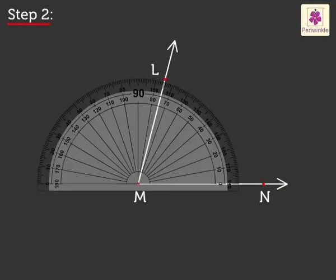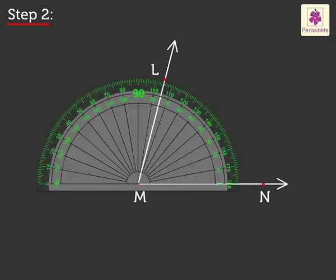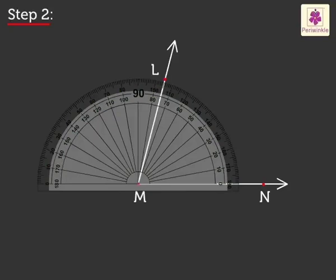Note that the protractor has two sets of readings. We read from whichever side the ray of the angle is pointing towards. Here, we read the scale from the zero on the right as ray MN points to the right.